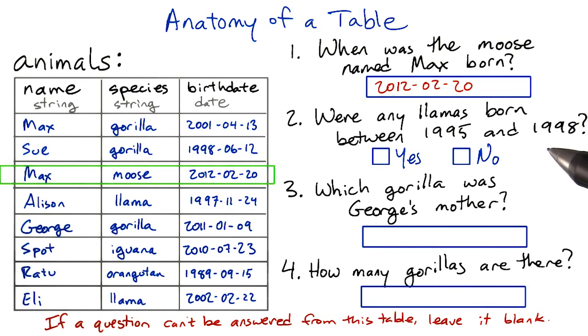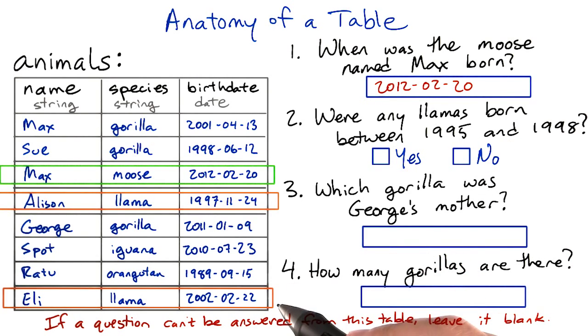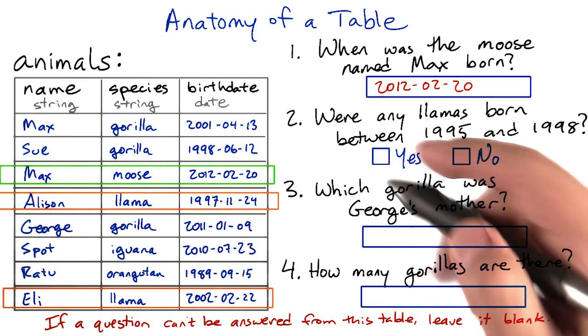Next, we want to know if there are any llamas born between 1995 and 1998. Well, here are all the animals whose species is llama. And we can scan through these to see if any of the birth dates were between those years. And sure enough, here's Allison. So the answer is yes.